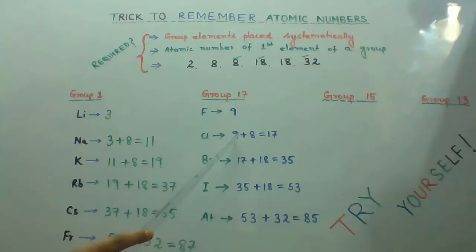Bring this 9 down, add 8, so it becomes 17. Bring the 17 down, add 18, gives you 35. Bring this 35 down, add 18, you will get 53. Bring this 53 down, add 32.